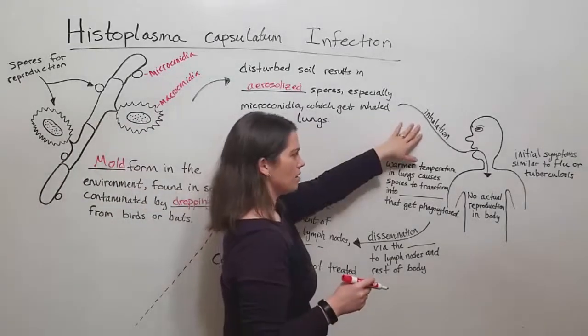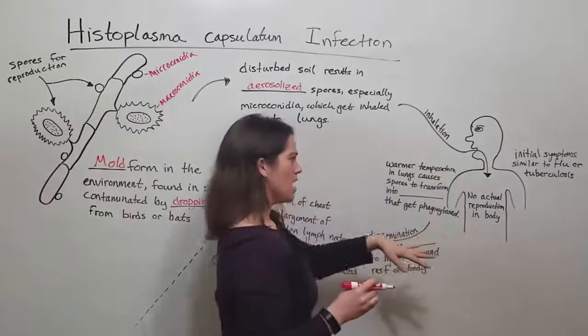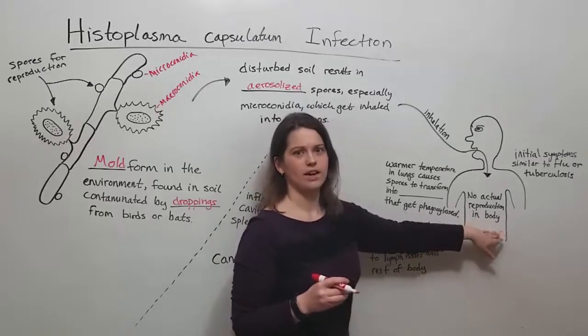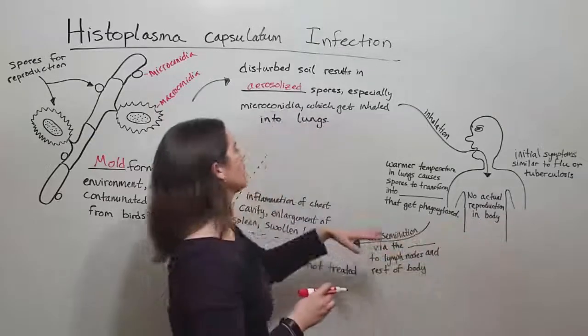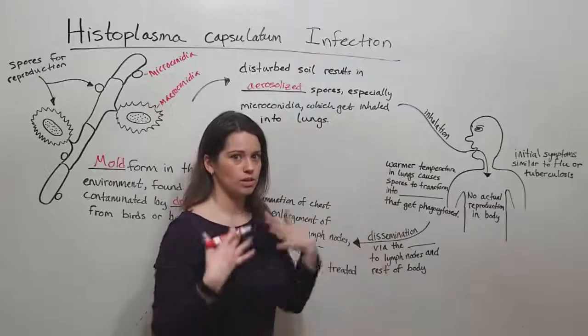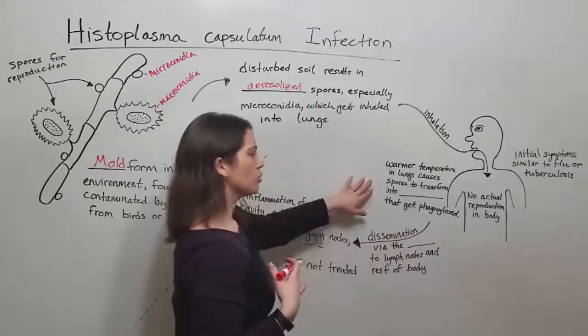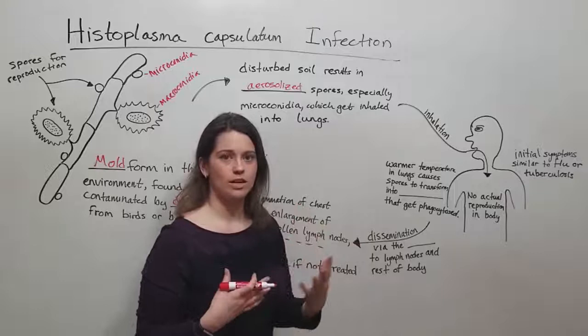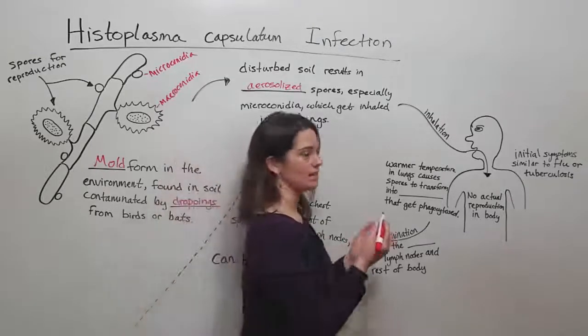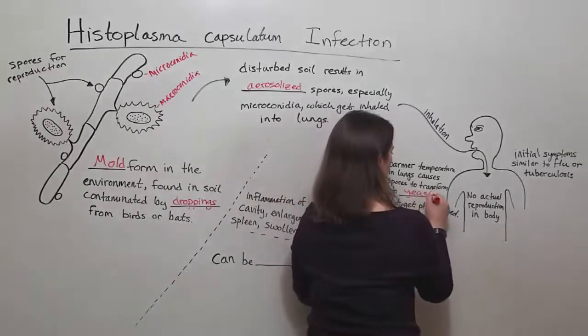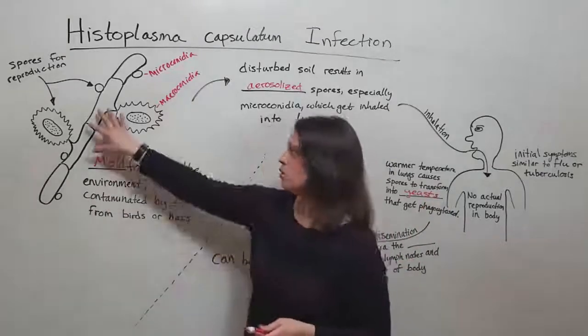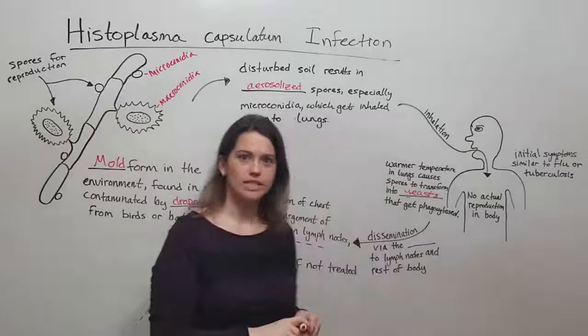So they get inhaled, they enter the human body into the lungs, and there's not actually any reproduction of this fungus inside the human body, usually. However, the warmer temperature in the lungs causes all of the spores that are inhaled to transform into a different sort of phenotypic life stage of the fungus known as yeasts. So it's a yeast or budding yeast cells, no longer this mold form, but this unicellular yeast form instead.